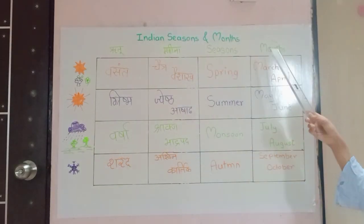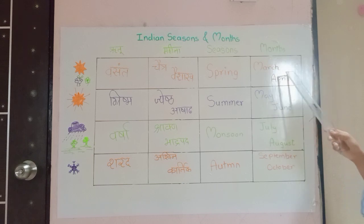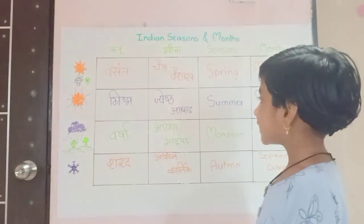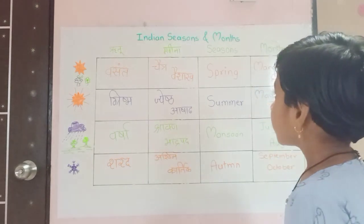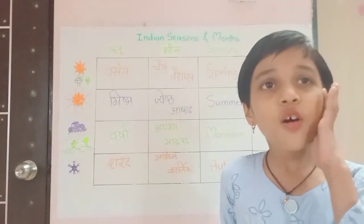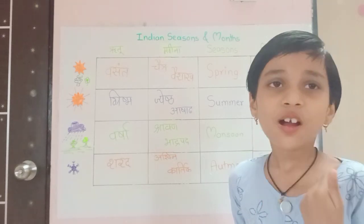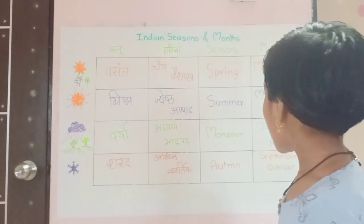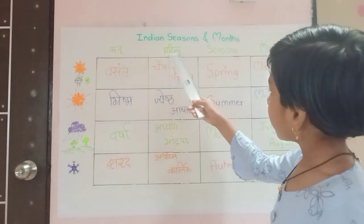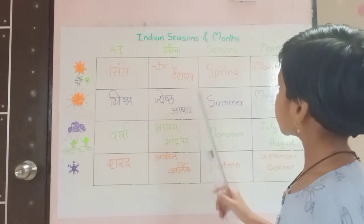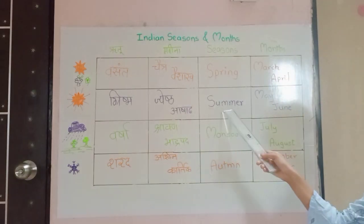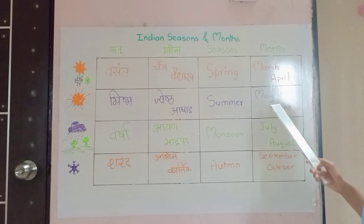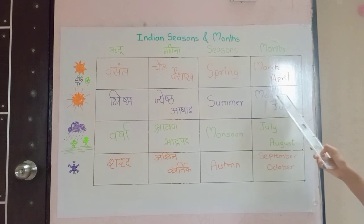It falls in March and April. Next is Ritu Grishma. Oh, it's so hot and sweaty! It falls in Mahina Jyeshtha and Ashadha. The English name for Grishma is Summer, which falls in May and June.